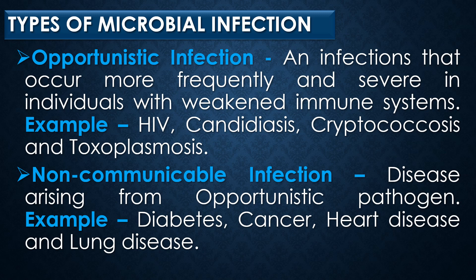The next type is non-communicable infection. A disease arising from an opportunistic pathogen is referred to as non-communicable infection. Diabetes, cancer, heart disease, and lung diseases are examples of non-communicable infections.